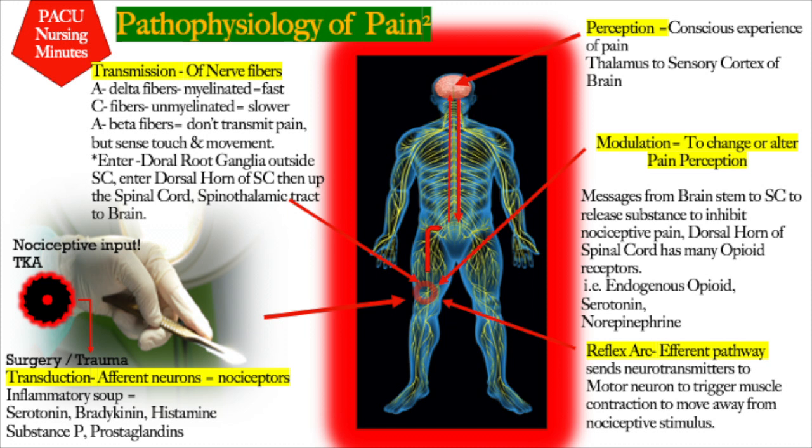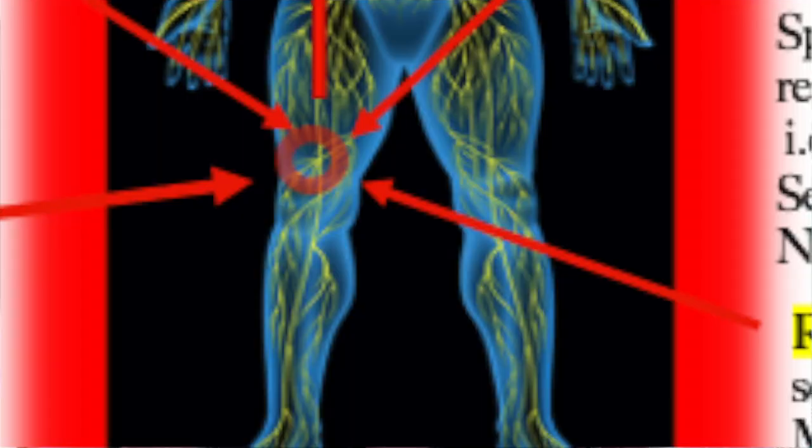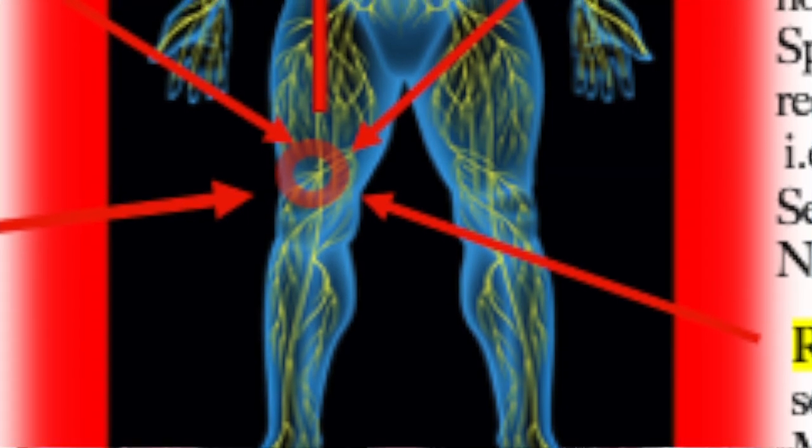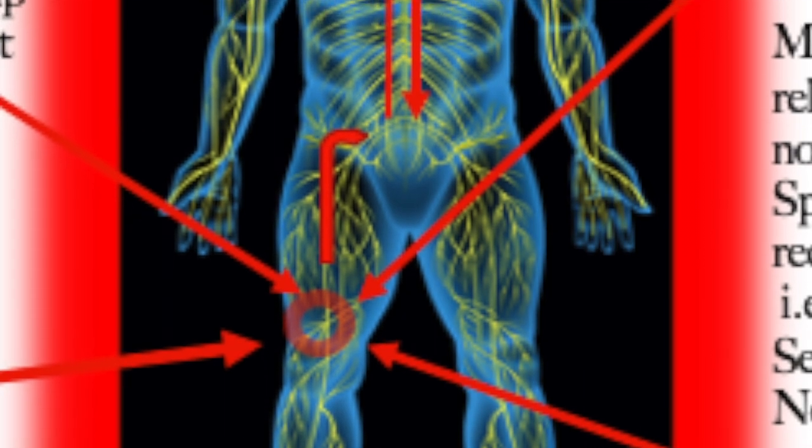It's good to understand the pathway of the pain process. I'm a visual person, and I really get it when I can draw a picture. This is a diagram of all of your spinal nerves, your cord, and your brain. For the nociceptive input, we'll use the example of a patient having a total knee replacement. Surgically, we induce a nociceptive input stimulus to those peripheral nerves when the surgeon cuts. This immediately releases an inflammatory response of serotonin, bradykinins, histamine, substance P, and prostaglandins.